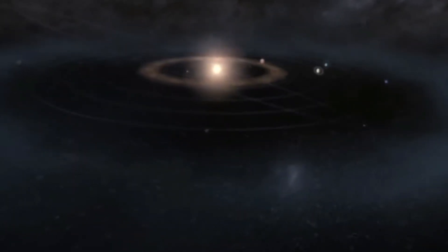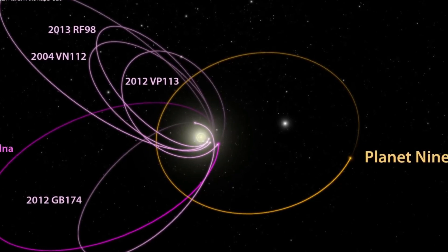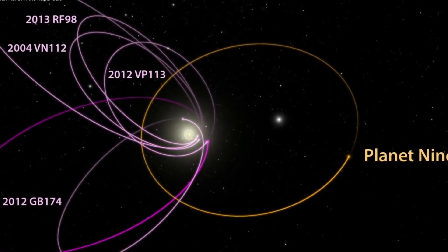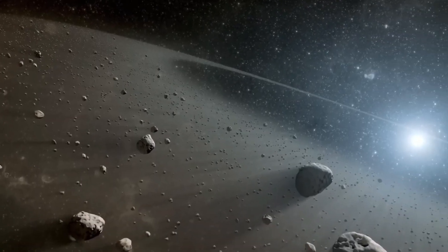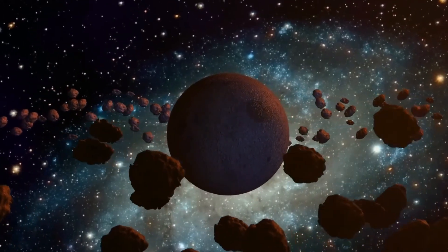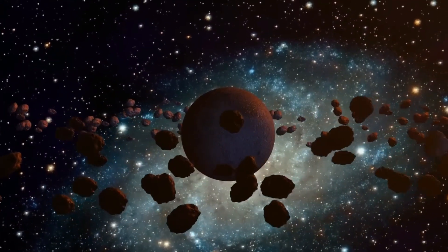The idea of a ninth planet isn't new. As far back as the 19th century, astronomers observed strange anomalies in the orbits of distant objects. These irregularities pointed to something massive, something we couldn't see, but could feel through its gravitational pull.